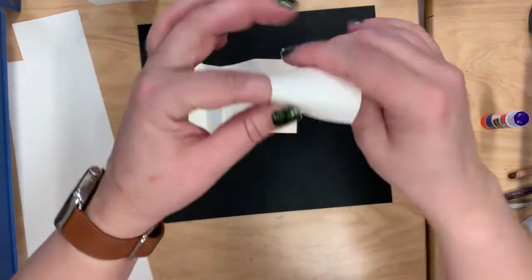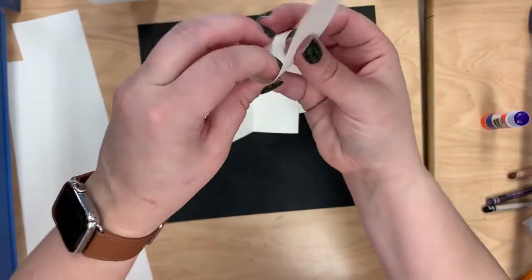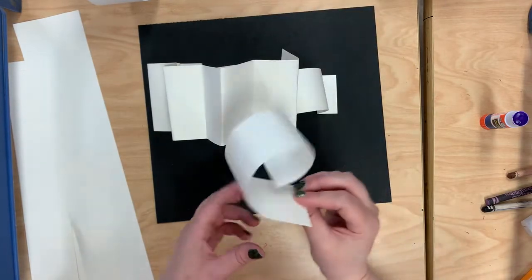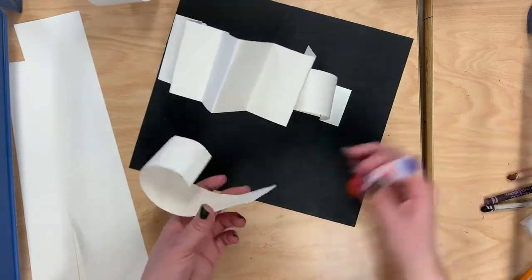So I could also curl this like a curly Q to make a shape. Maybe I'll put that right here.